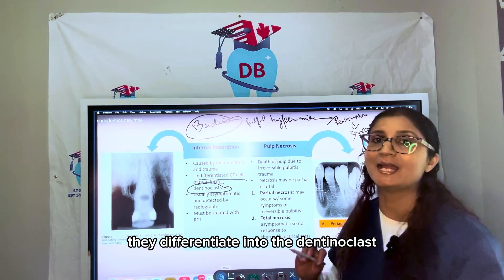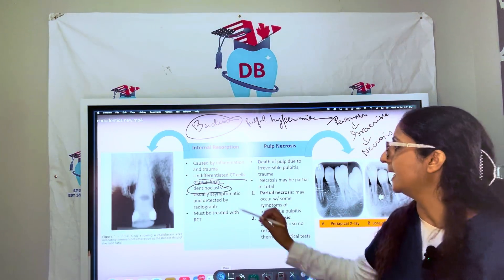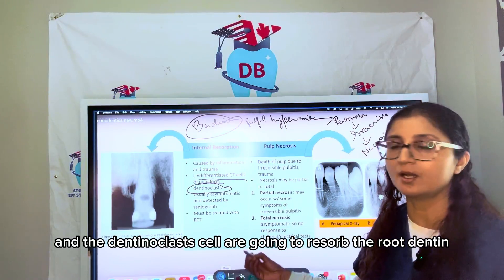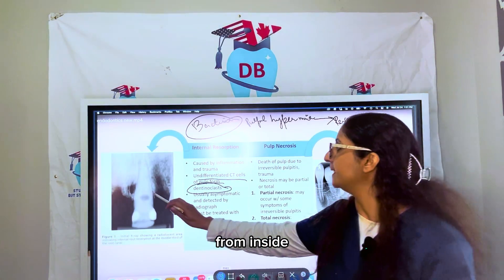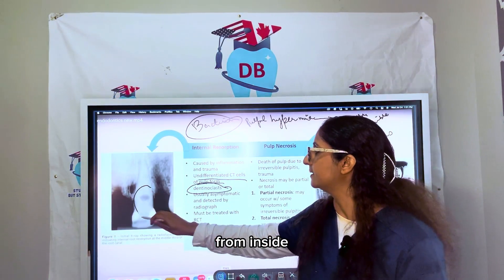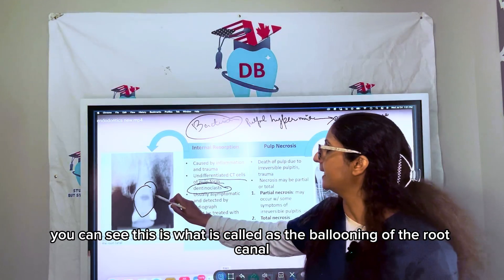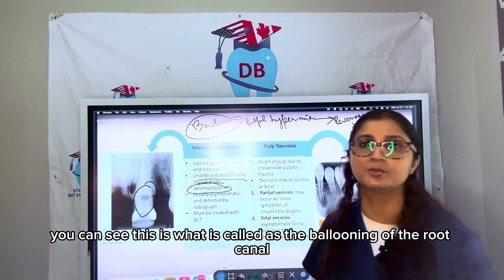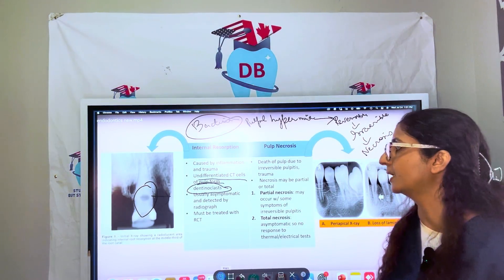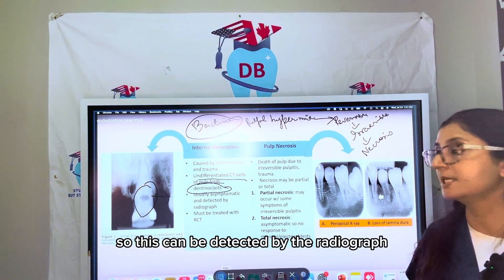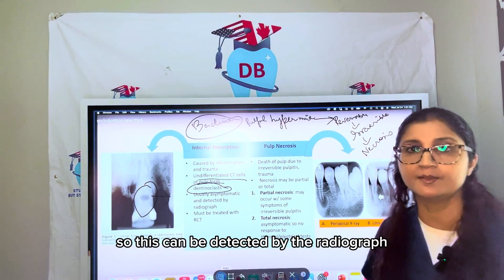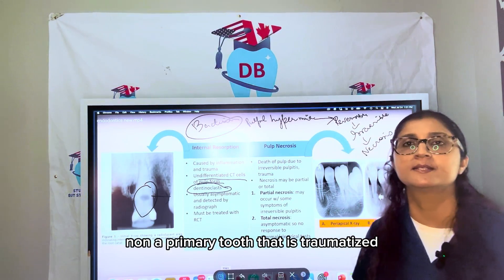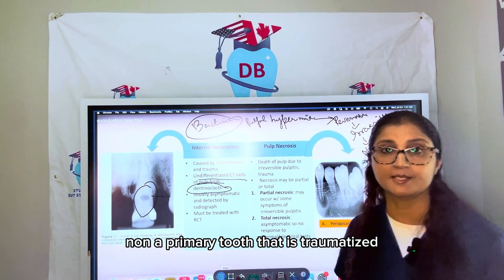In internal resorption, due to trauma, the undifferentiated connective tissue cells of the pulp differentiate into dentinoclasts. These dentinoclast cells resorb the root dentine from inside, resulting in what is called ballooning of the root canal. This can be detected by radiograph in a primary tooth that is traumatized.